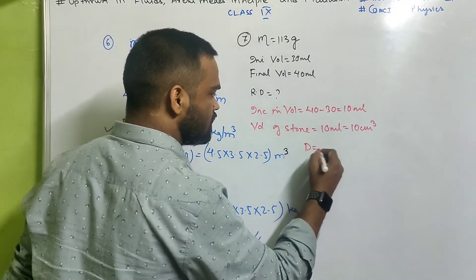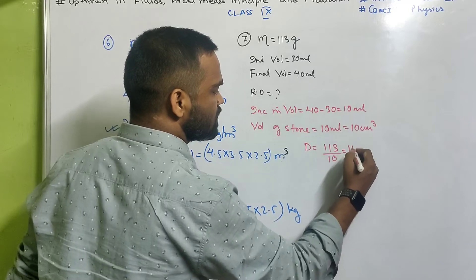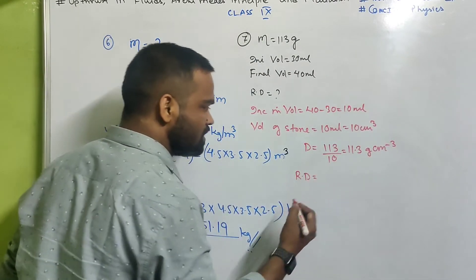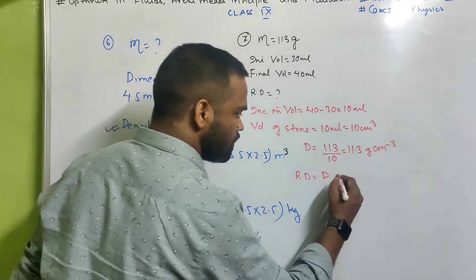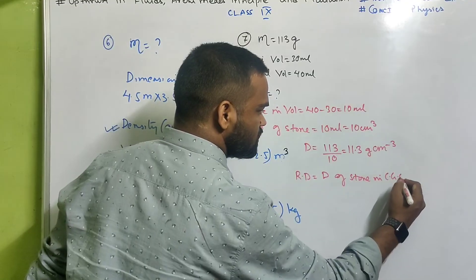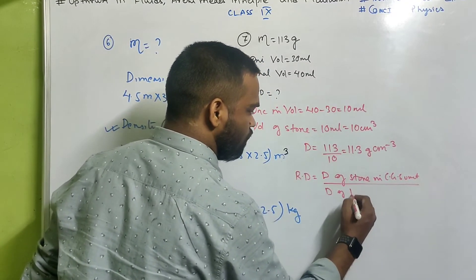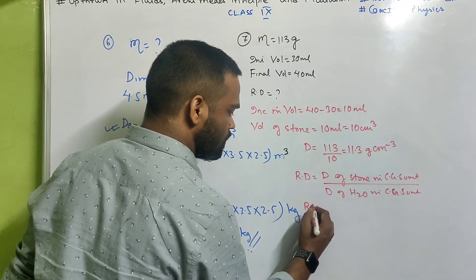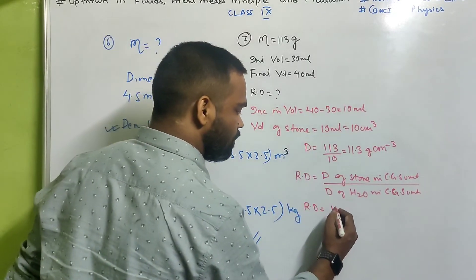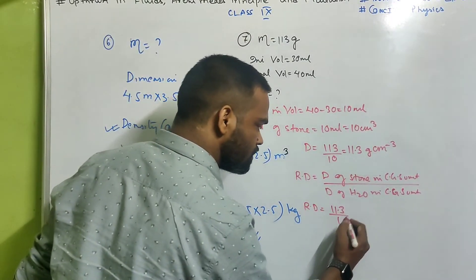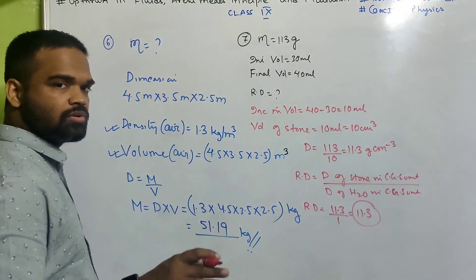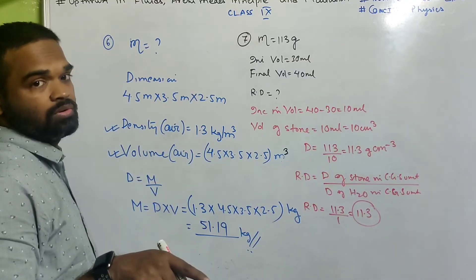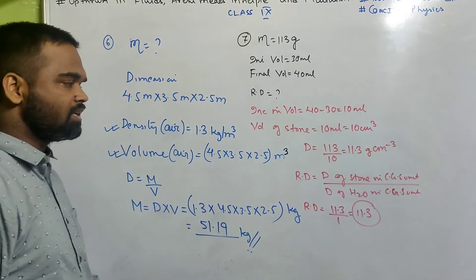First find density. Density = mass ÷ volume = 113 ÷ 10 = 11.3 g/cm³. Now, relative density = density of stone in CGS ÷ density of water in CGS = 11.3 ÷ 1 = 11.3. Relative density does not have a unit. The increase in volume becomes the volume of the stone — once you have volume and mass, find density; once you have density, find relative density. Same logic.